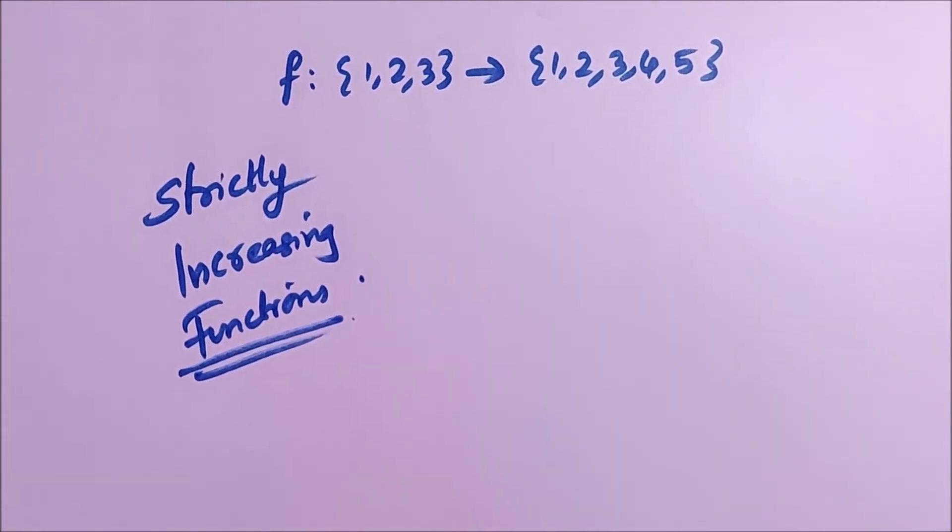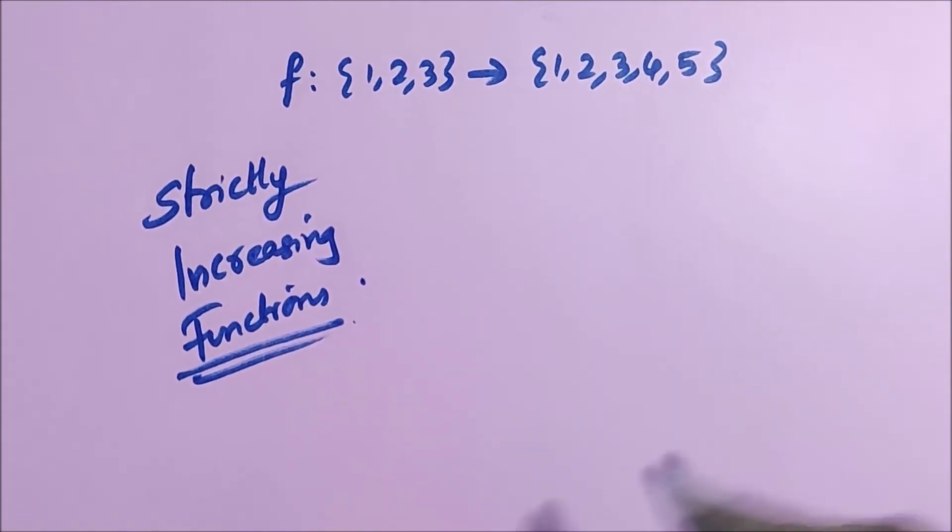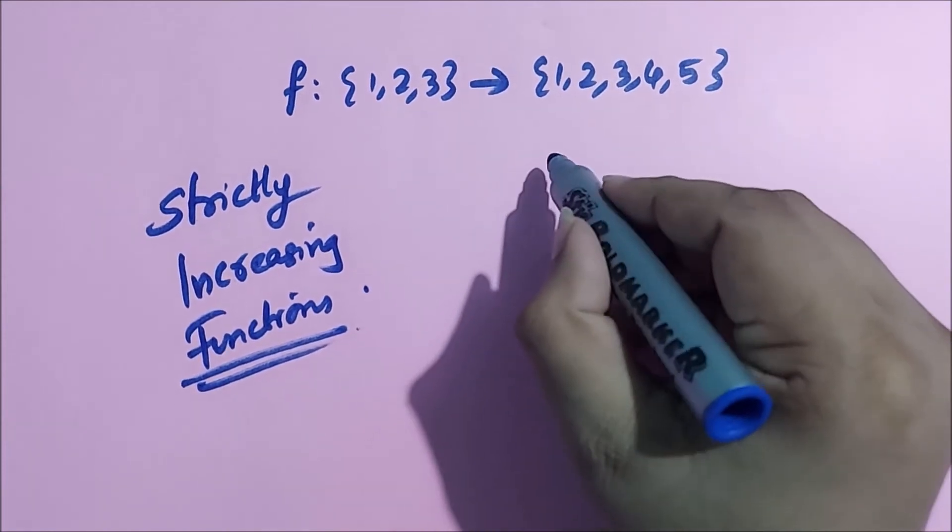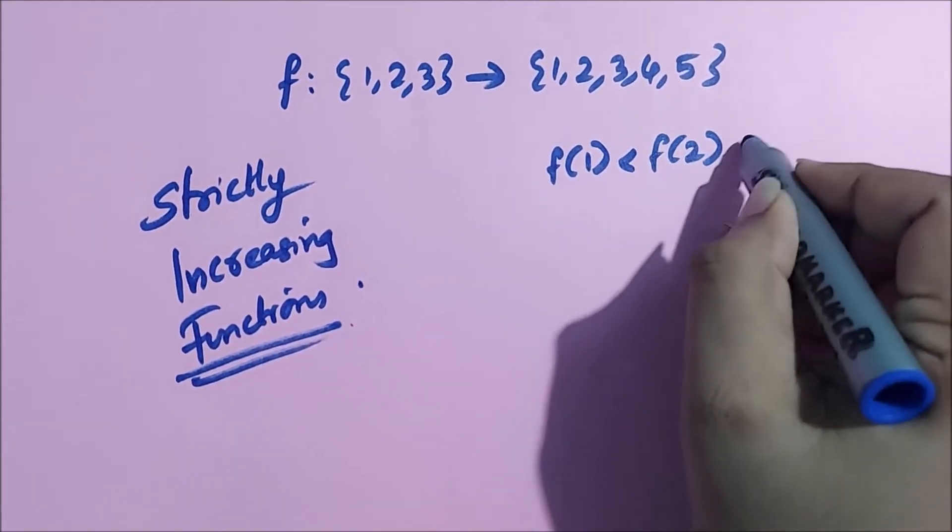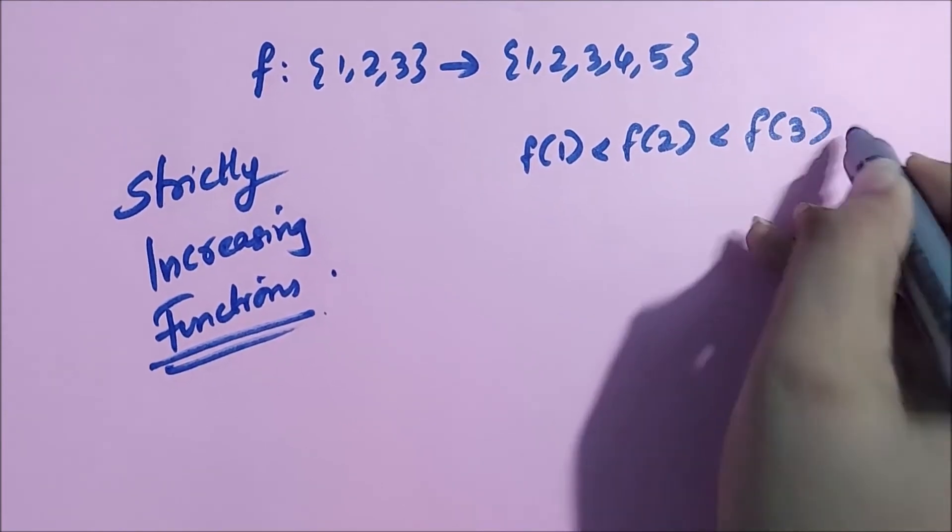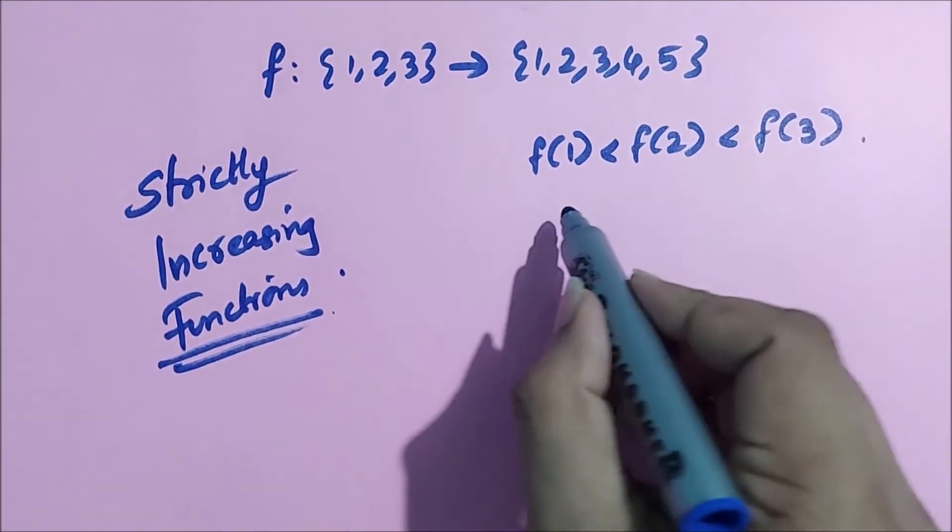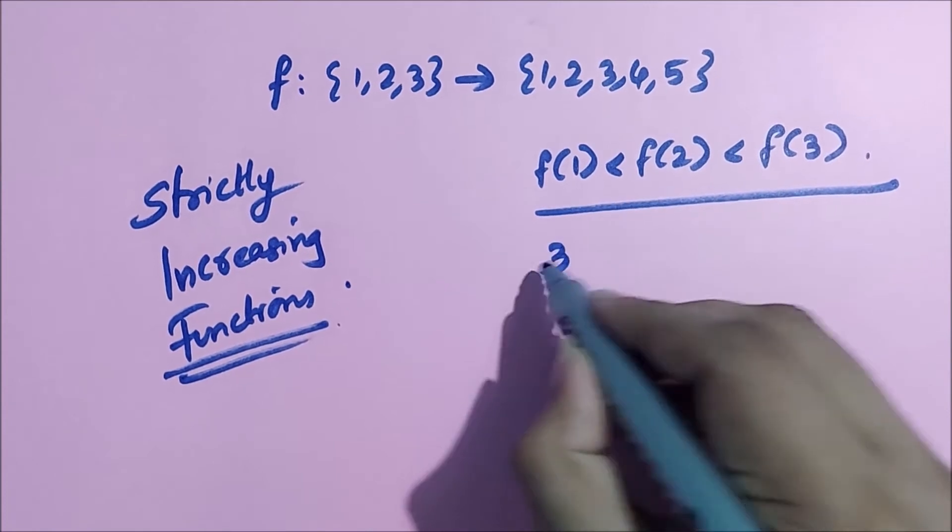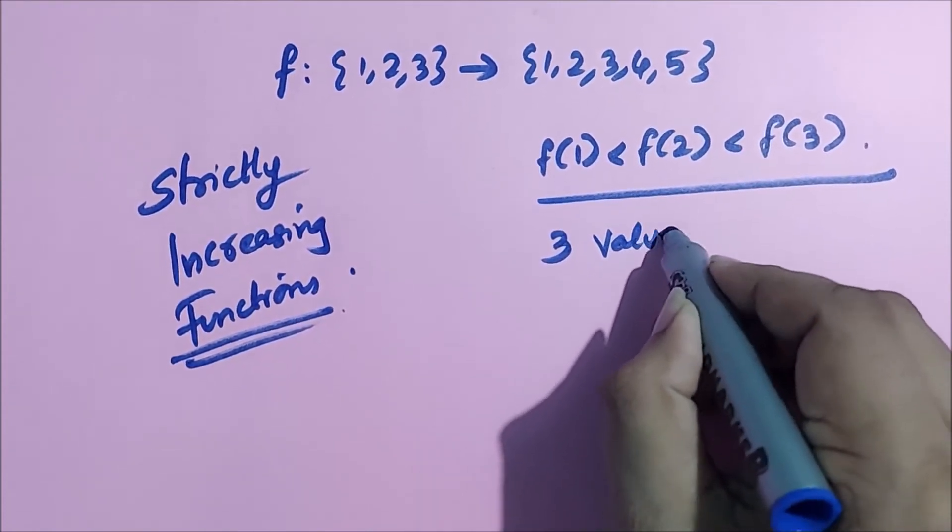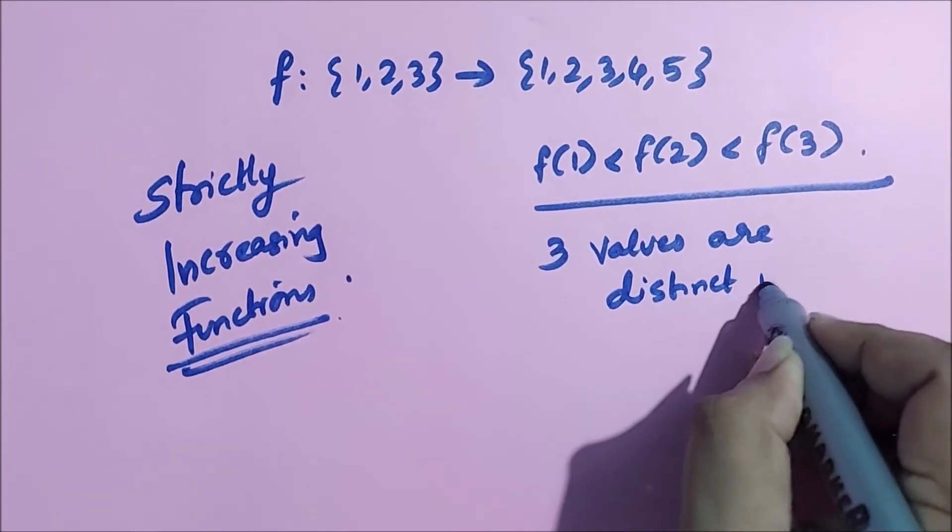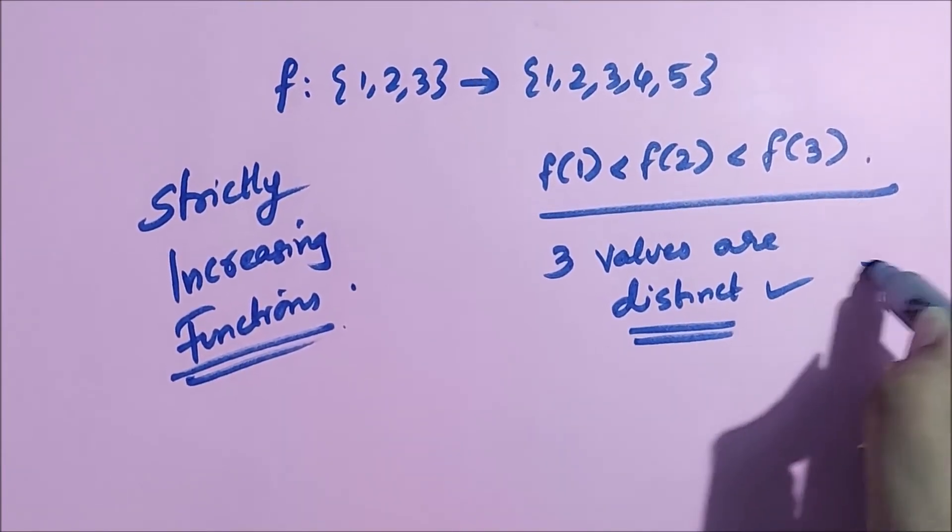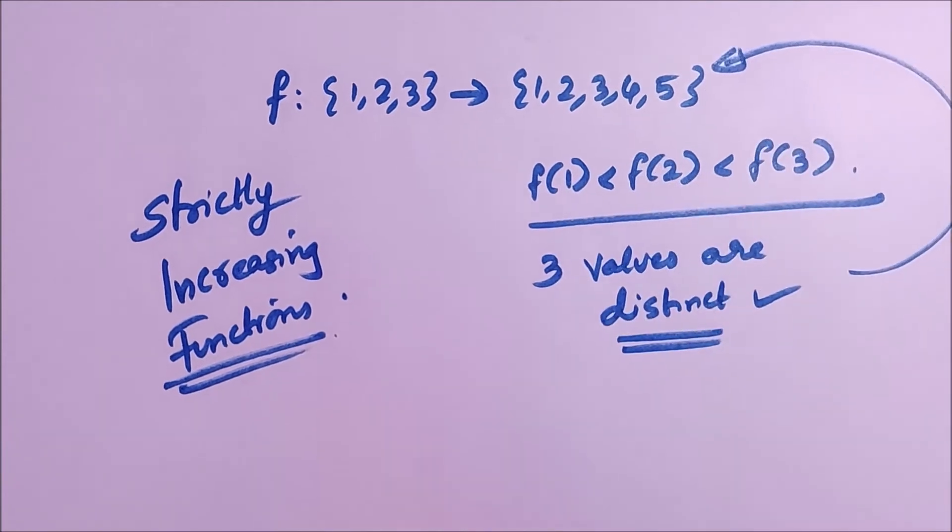So first observation is that when it is strictly increasing, f of 1 is less than f of 2 less than f of 3. So we get to know that all of these three values are distinct, and they are coming from this set.